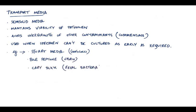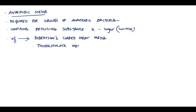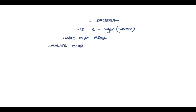Anaerobic media are required for growth of anaerobic bacteria such as clostridium. They contain reducing substances such as sucrose which help to maintain the anaerobic environment. Examples are Robertson's cooked meat media and thioglycolate media. Lastly, let's talk about one special media that might cause some confusion, the enrichment media.